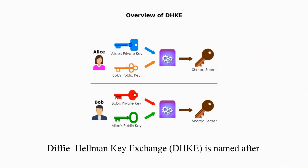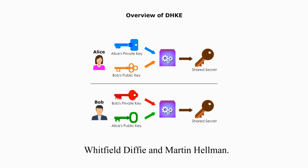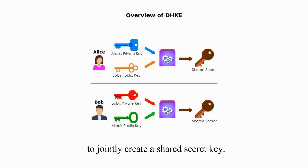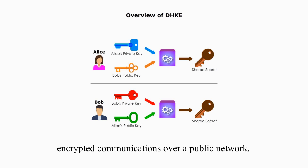Diffie-Hellman Key Exchange is named after Whitfield Diffie and Martin Hellman. DHKE Protocol allows two parties that have no prior knowledge of each other to jointly create a shared secret key. Then the secret key can be used for encrypted communications over a public network.